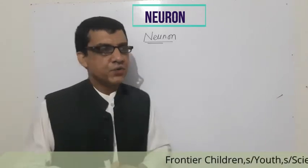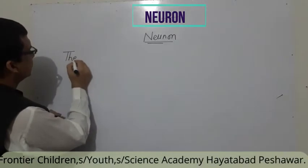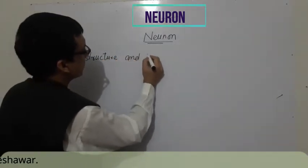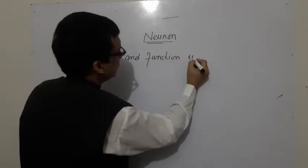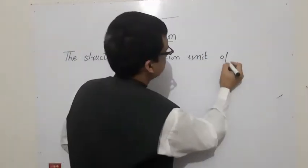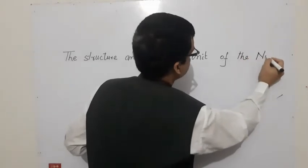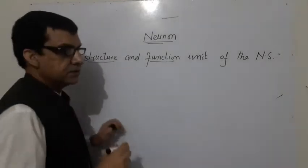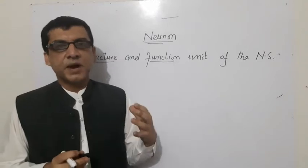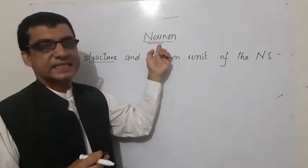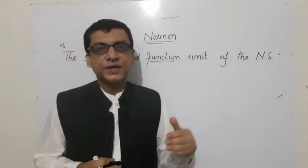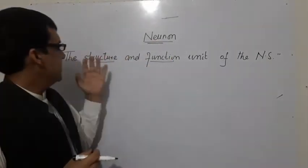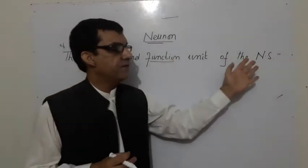How do we define a neuron? A neuron is the structural and functional unit of the nervous system. Structural unit means that the brain and spinal cord are composed of neuron cells. Functional unit means that all the functions of the nervous system also occur inside the neuron.